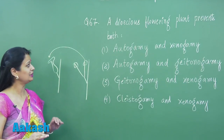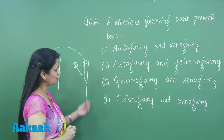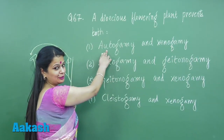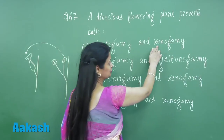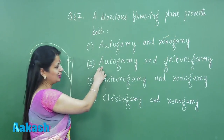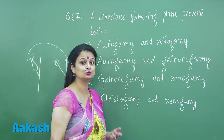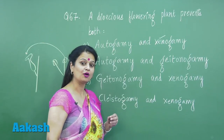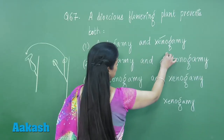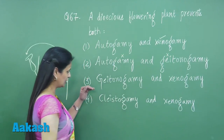So it is clear that the dioecious plant exhibits xenogamy. Looking at the options: autogamy involves only one flower in the pollination, so it will not happen in dioecious plants. Geitonogamy is pollination between two flowers that belong to the same plant, so it also does not happen in the dioecious condition.